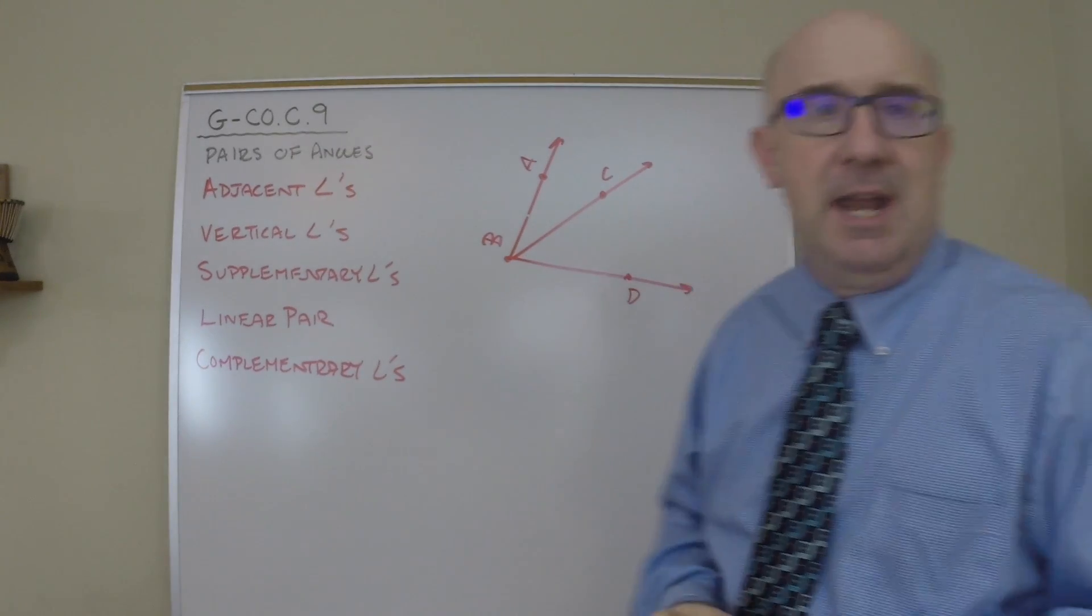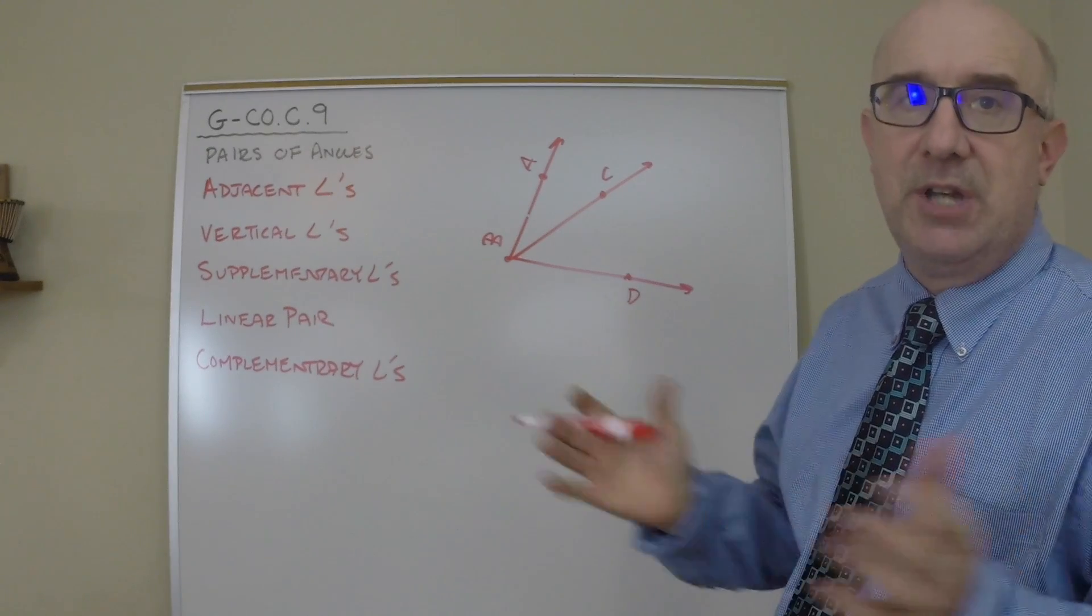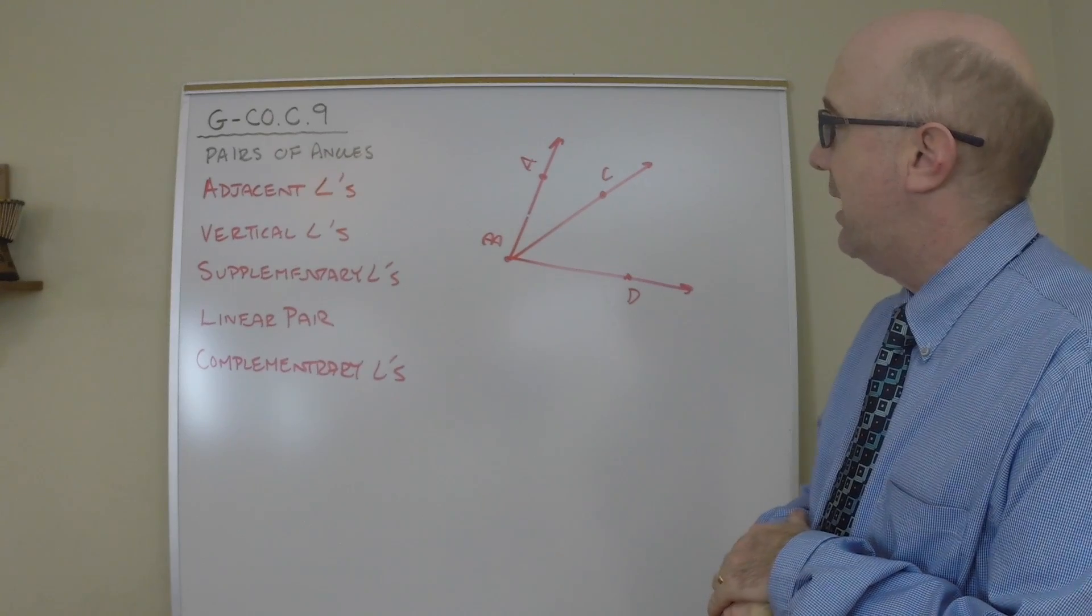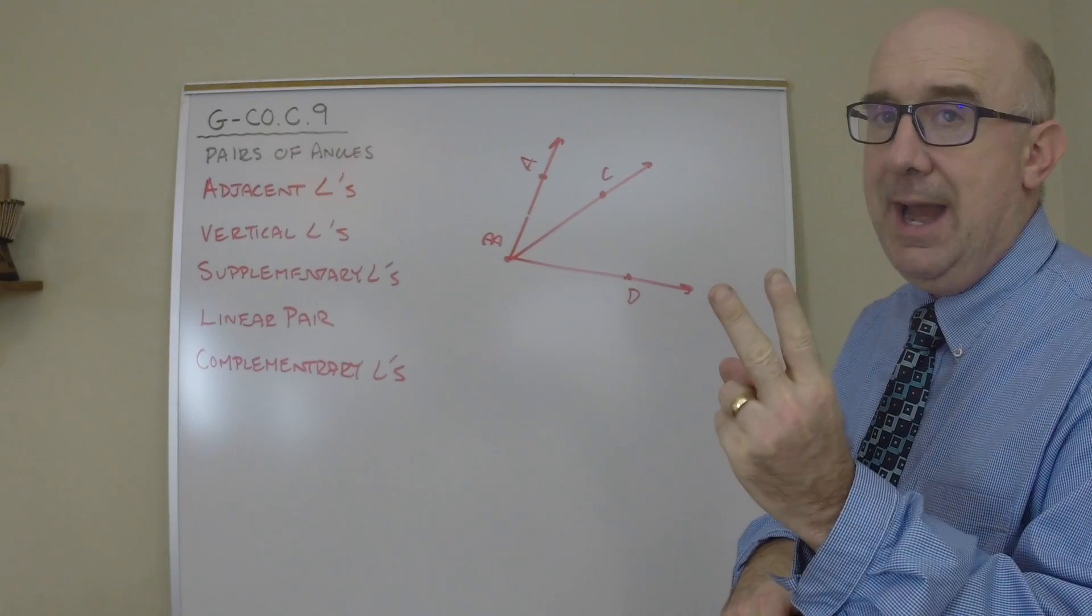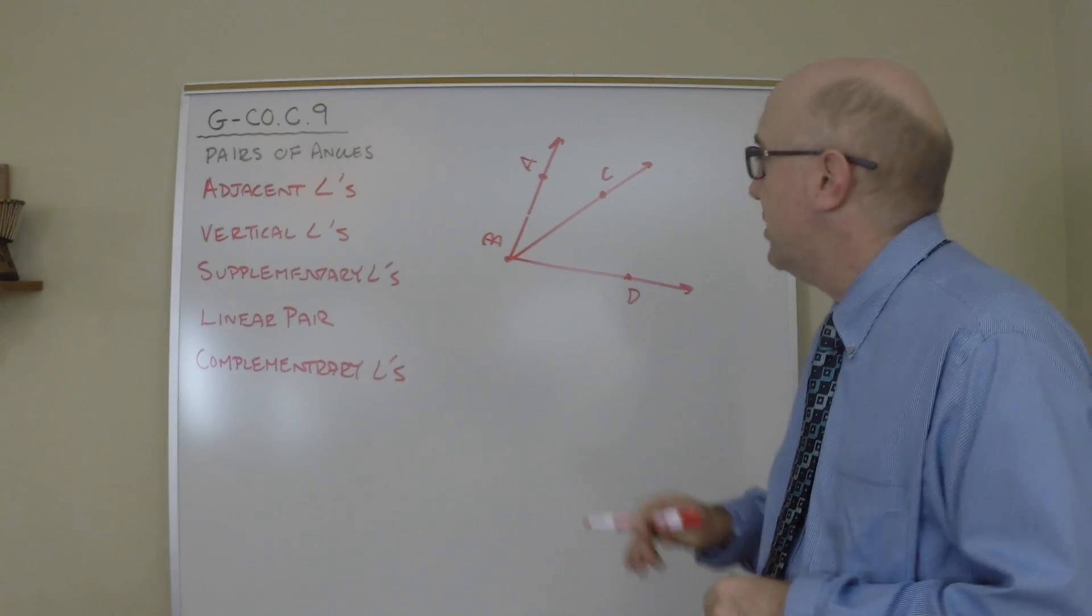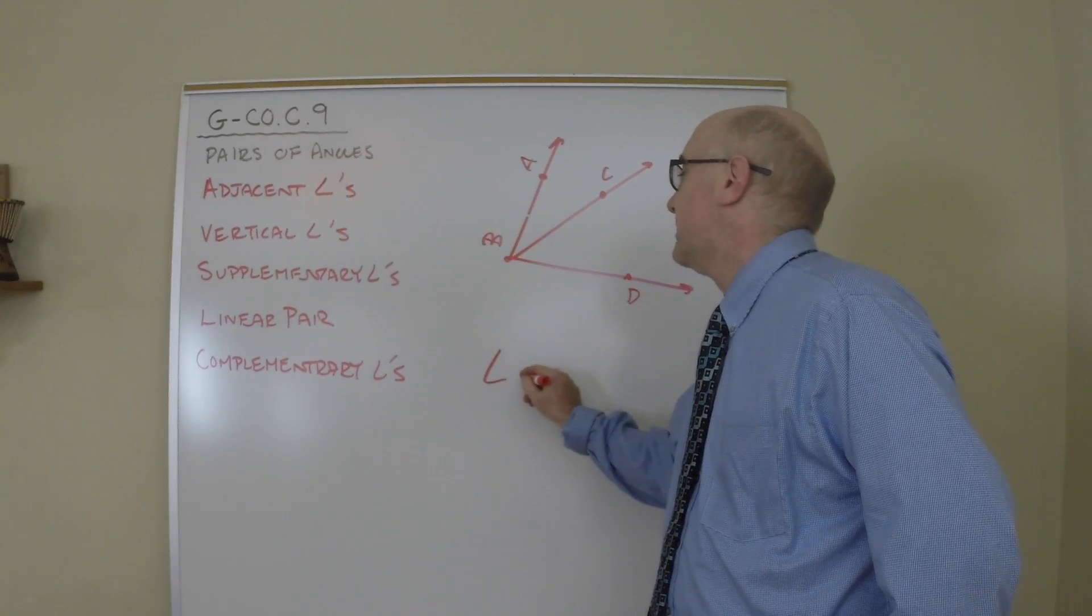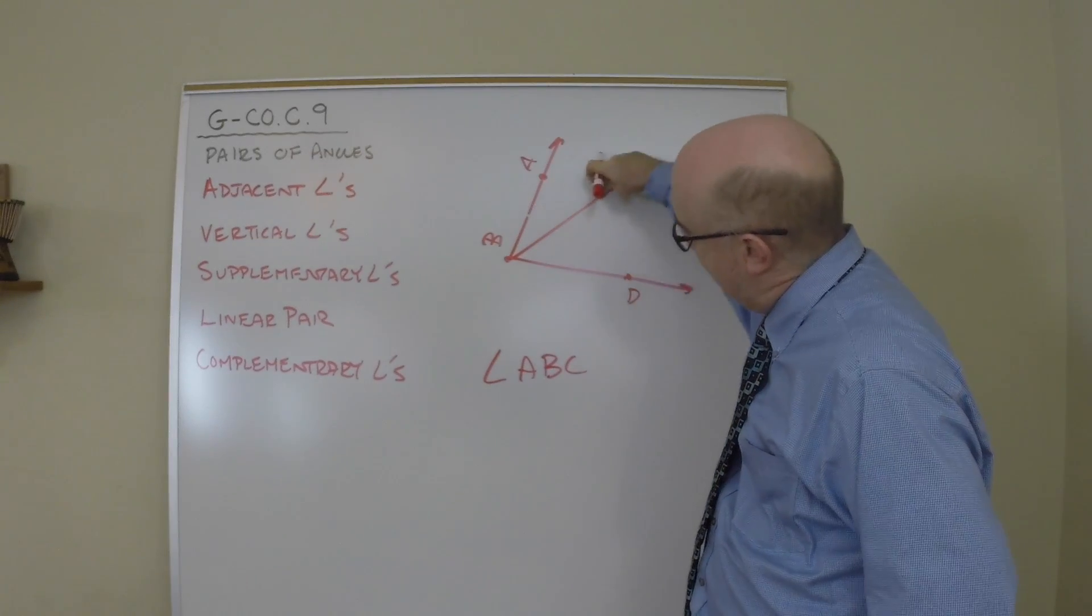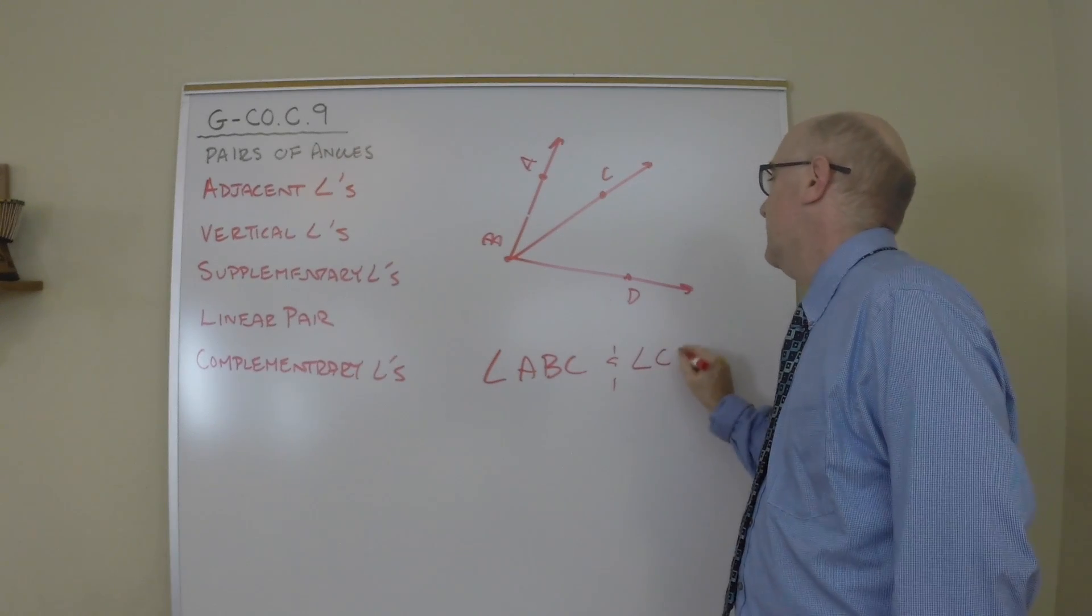Now adjacent angles are speaking about two angles, or sometimes more, but adjacent means side-by-side, two angles that share a vertex, share a ray, and no interior points. So a nice example of angles that are adjacent would be angle ABC, the angle in here, and angle CBD.